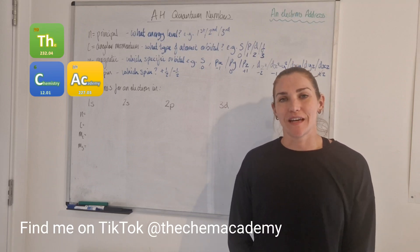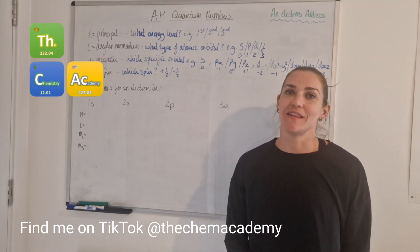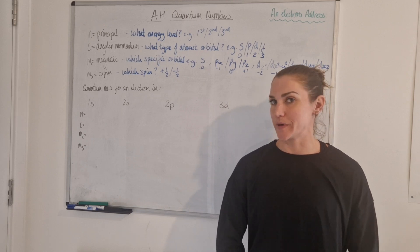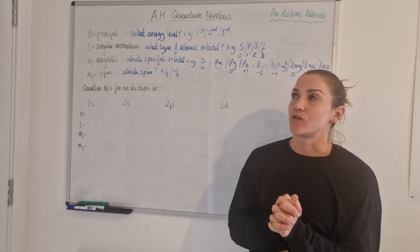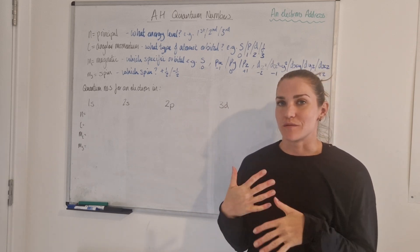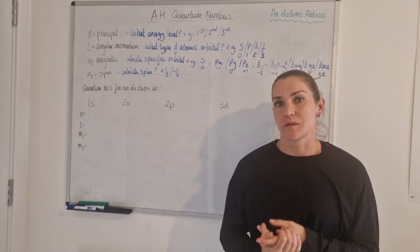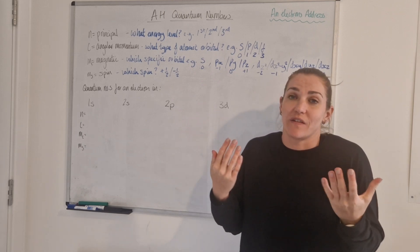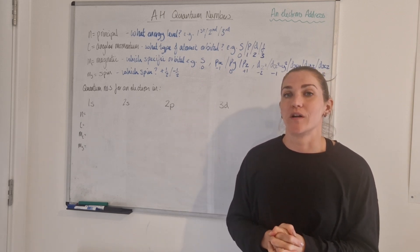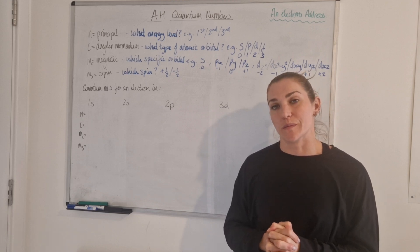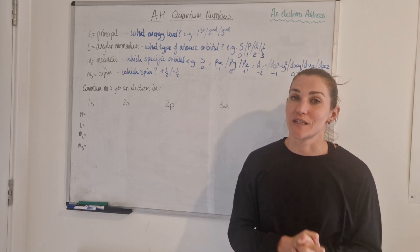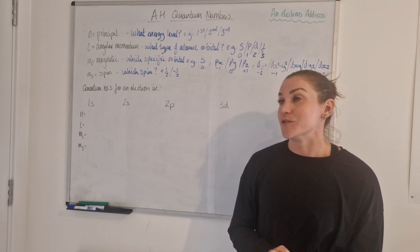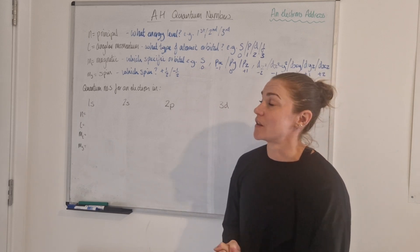Hi there and welcome to the Chemistry Academy. In this video we're going to look at advanced higher chemistry quantum numbers. This is just the way that I like to think of quantum numbers — there'll be other ways to go about learning it, but this is just the way I found it easiest to remember what all the quantum numbers were and how to assign them to an electron. I hope this helps you if it's something you're struggling with.